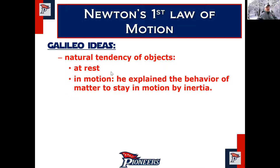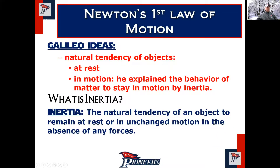Galileo had the idea of the natural tendency of objects at rest — when you look at something not moving, it doesn't want to move, and to make it move you have to apply an outside force. Then he said if an object is in motion, it's because of its inertia. Inertia is an Italian word — and he was Italian — and it actually means 'lazy' in Italian. That's also why Newton's First Law is sometimes called the Law of Inertia, because the wording is very similar.